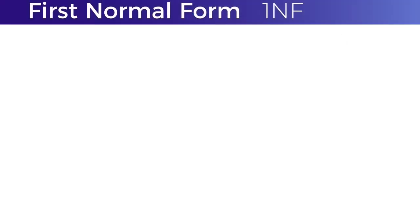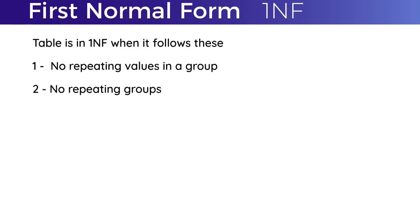For a table to be in First Normal Form, it needs two criteria — two things that should not happen in this table: first, no repeating values in a group, and second, no repeating groups in the table.